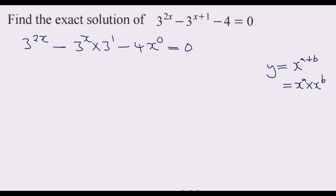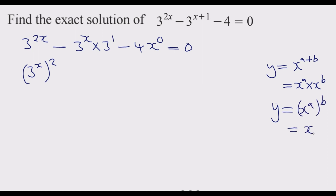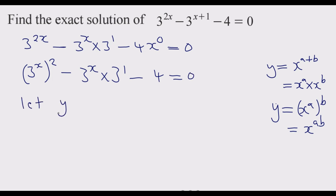This function can further be written as 3 to the power x, to the power 2, because if you have y equal to x to the power a, to the power b, it is the same as x to the power ab — you multiply the powers. Then minus 3 to the power 1 times x multiplied by 3 to the power 1, minus 4. Let me write it in simplified form.